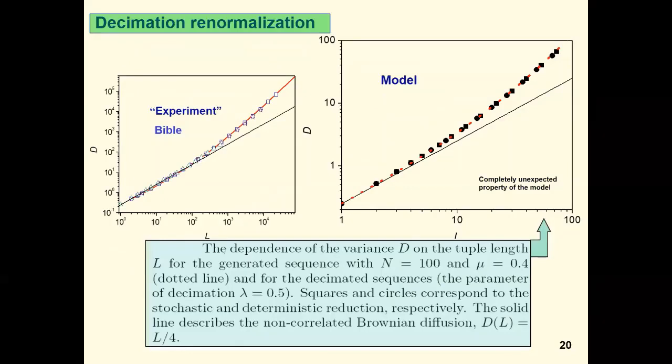Self-similarity of the model: If we delete some part of symbols in the text, then the correlation length decreases, but the strength of correlations stays unchangeable. This decimation process can be deterministic when we delete, say, each second symbol, or stochastic when we delete each symbol with probability one half. On this slide, we see the dependence of variance D on the word length L for the generated sequence and for the decimated sequence. Parameter of decimation lambda is equal 0.5. Squares and circles correspond to the stochastic and deterministic reduction, respectively. It is surprising that this property of the model is presented in real texts.